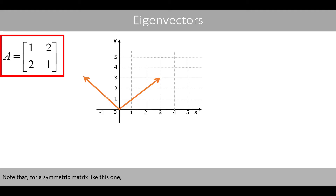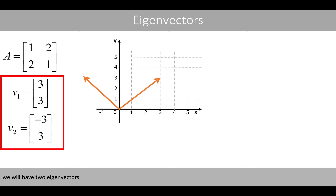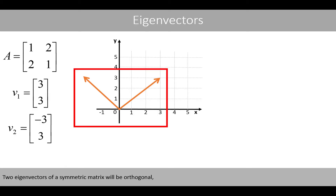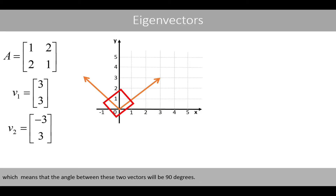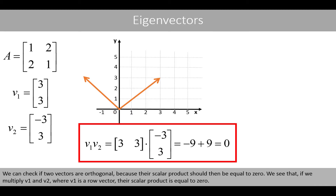Note that for a symmetric matrix like this one, we will have two eigenvectors. Two eigenvectors of a symmetric matrix will be orthogonal, which means that the angle between these two vectors would be 90 degrees. We can check if two vectors are orthogonal because the scalar product should then be equal to 0. We see that if we multiply v1 and v2, where v1 is a row vector, the scalar product is equal to 0.